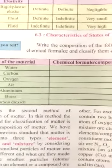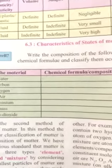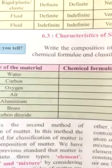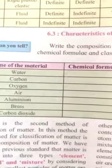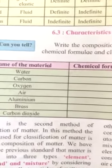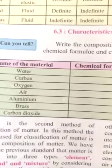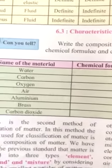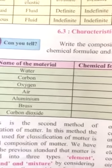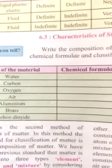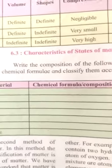Now you have to write chemical formulas. Water is H2O, carbon dioxide is CO2, oxygen is O2, air — you have to find it and write. Aluminium is Al, brass is Be — only Be, not Br. And carbon dioxide again is CO2, and carbon monoxide is CO.